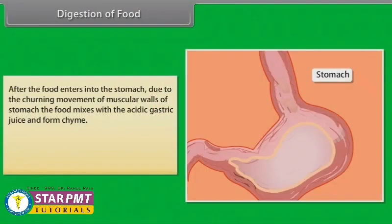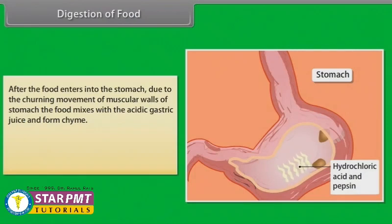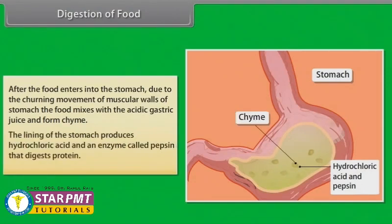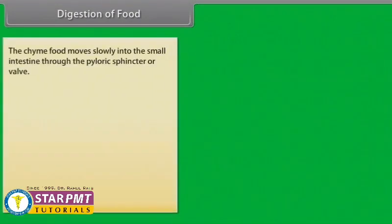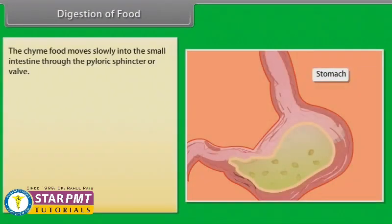After food enters the stomach, the churning movement of the muscular walls mixes it with the acidic gastric juice to form chyme. The lining of the stomach produces hydrochloric acid and an enzyme called pepsin that digests protein. The chyme then moves slowly into the small intestine through the pyloric sphincter or valve.